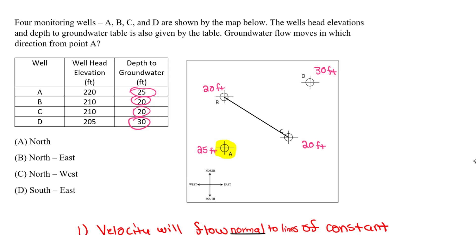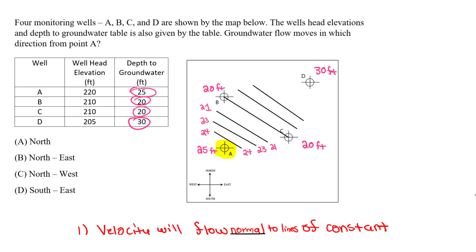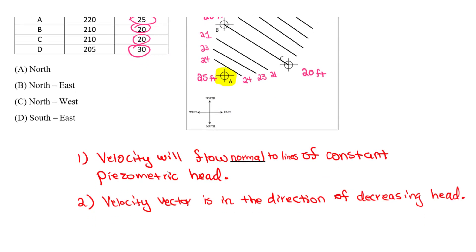Since A is at 25 ft and B and C are at 20 ft, we can interpolate intermediate equipotential lines: 24, 23, and 21 ft between A and the B-C line. We can continue drawing these lines to the right side as well, connecting the 24, 23, and 21 ft contours. These are our equipotential lines.